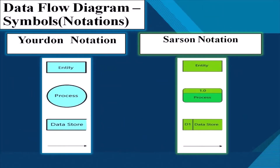There are different notations for data flow diagrams. In Yourdon notation, the entity or source or sink is represented by a rectangle, the process by an oval, the data store by an open rectangle, and data flow by a labeled arrow. In Sarson notation, the entity or source or sink is represented by a rectangle, the process by a rectangle with rounded corners, the data store by an open rectangle or parallel lines, and data flow by a named or labeled arrow.